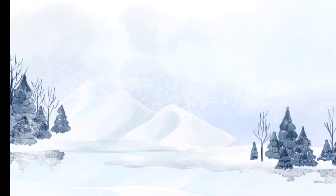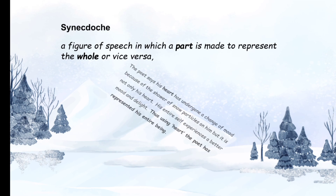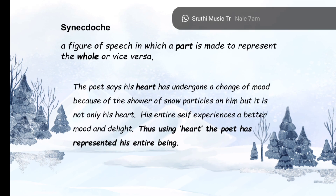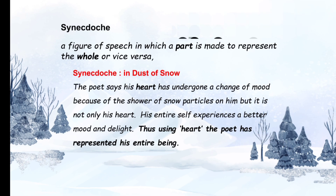The next figure of speech that the poet uses is synecdoche, in which a part is made to represent the whole or vice versa. In this poem, the poet says that his heart has undergone a change of mood because of the shower of snow particles on him. But we know that it is not only his heart — his entire self experiences a better mood and delight. Thus, by using 'heart,' the poet has represented his entire being. So this is an example of synecdoche.